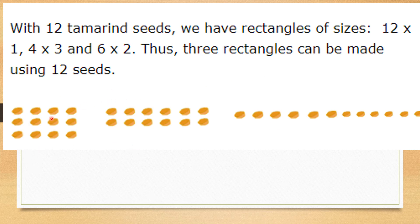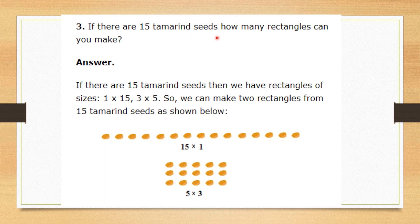With 12 tamarind seeds, we have rectangles of sizes 12×1, 4×3, 6×2 — so you can count 6 arrangements. The second question: if there are 15 tamarind seeds, how many rectangles can you make? With 15 seeds, the rectangle sizes are 1×15 and 3×5, giving us 2 rectangles. They are also teaching you how to find factors, which we will be learning on Tuesday.